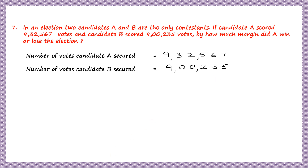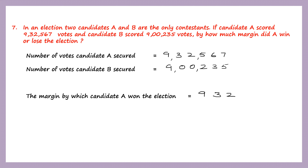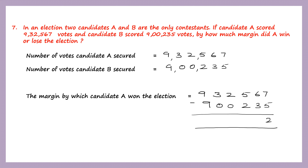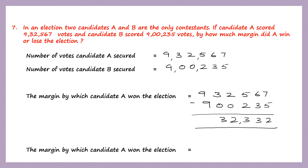Now we need to find by how much — how many more votes did candidate A get. To find the margin, we subtract: 9,32,567 minus 9,235. 7 minus 5 is 2, 6 minus 3 is 3, 5 minus 2 is 3, then we have 2 and 3. So candidate A won the election by 32,332 votes.